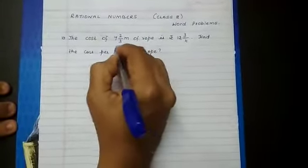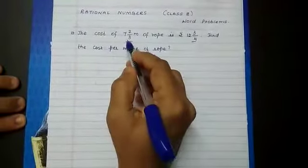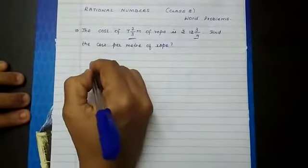So here first, they have given the cost of this much rope is this much. So it is in mixed fraction.